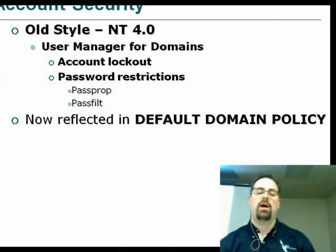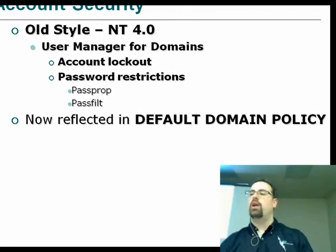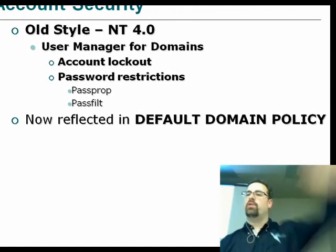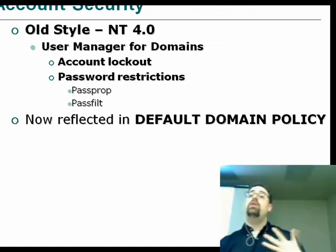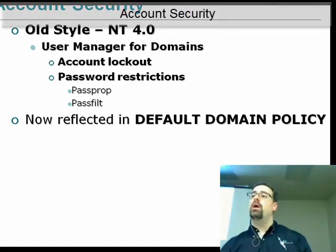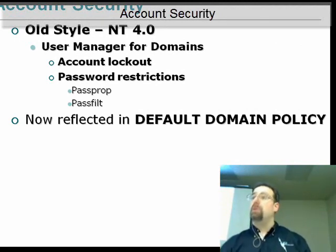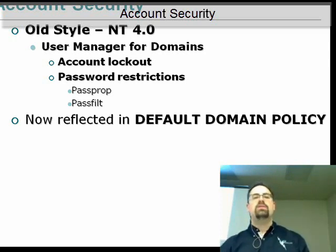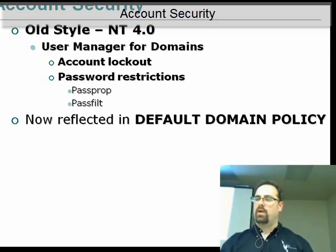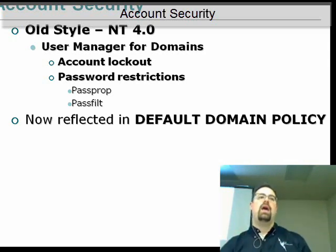First and foremost, we're going to talk about the default group policy objects. When you did an upgrade from Windows NT to Active Directory, you actually migrated forward a bunch of settings contained in user manager for domains — user accounts, policies, and password policies — and those things automatically got generated into your default domain policy. The default domain policy handles three very important things: account policy, Kerberos policy, and password policy.